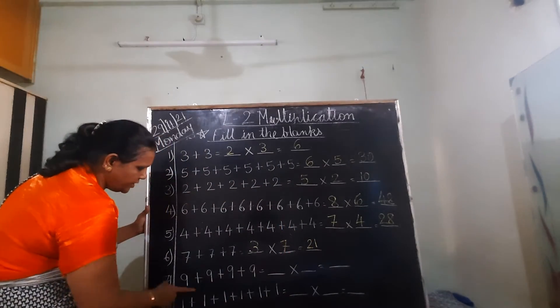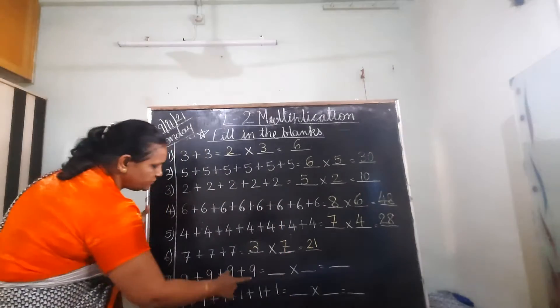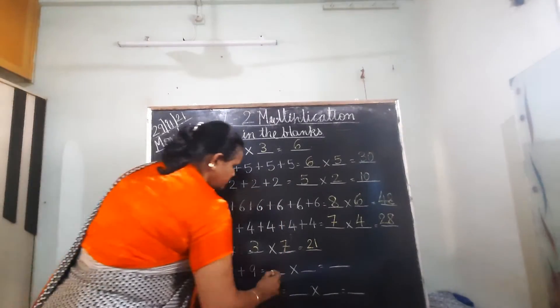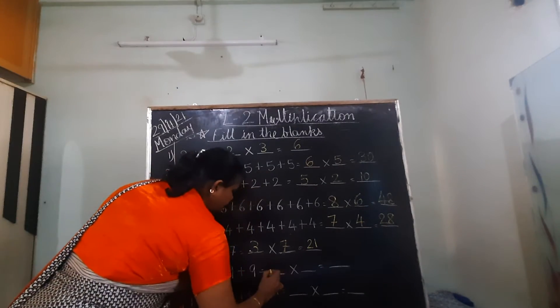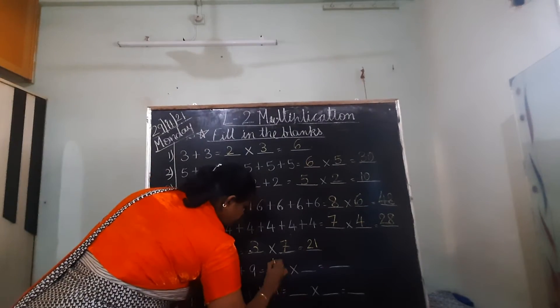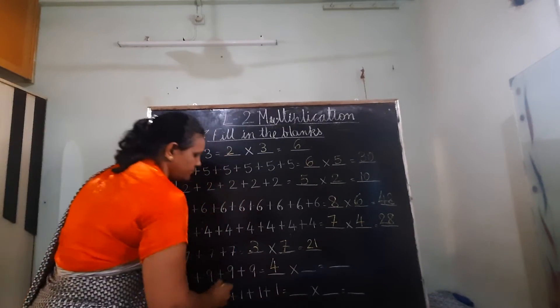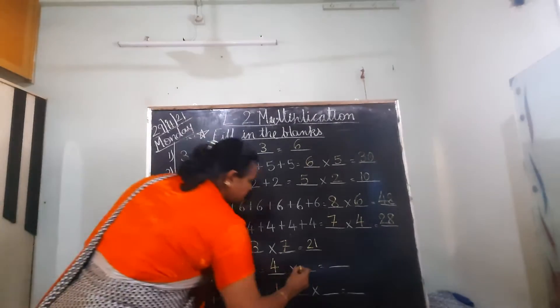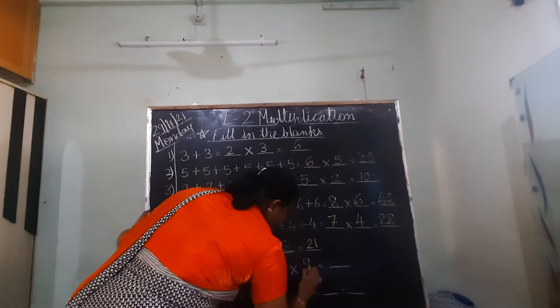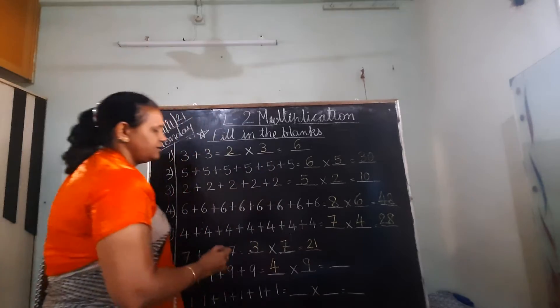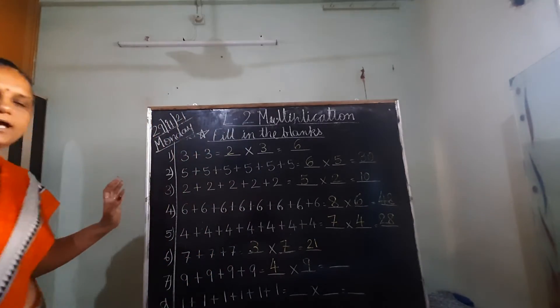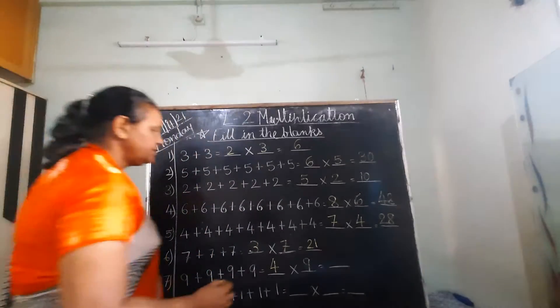9 is repeated for 1, 2, 3, 4 times. So write down 4. Which number is repeated? 9. 4 9's are 36.